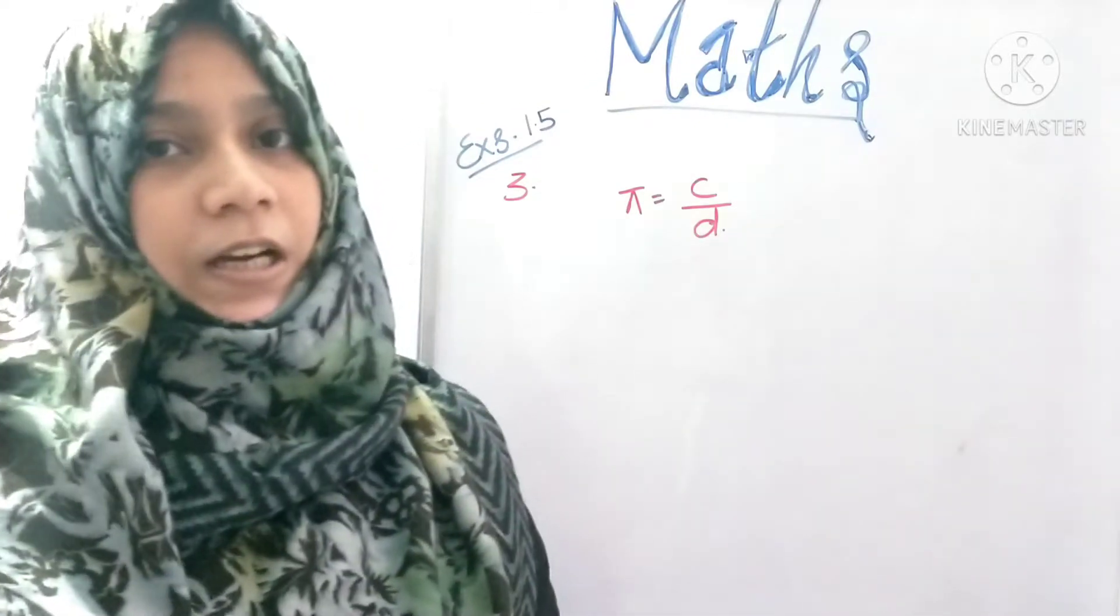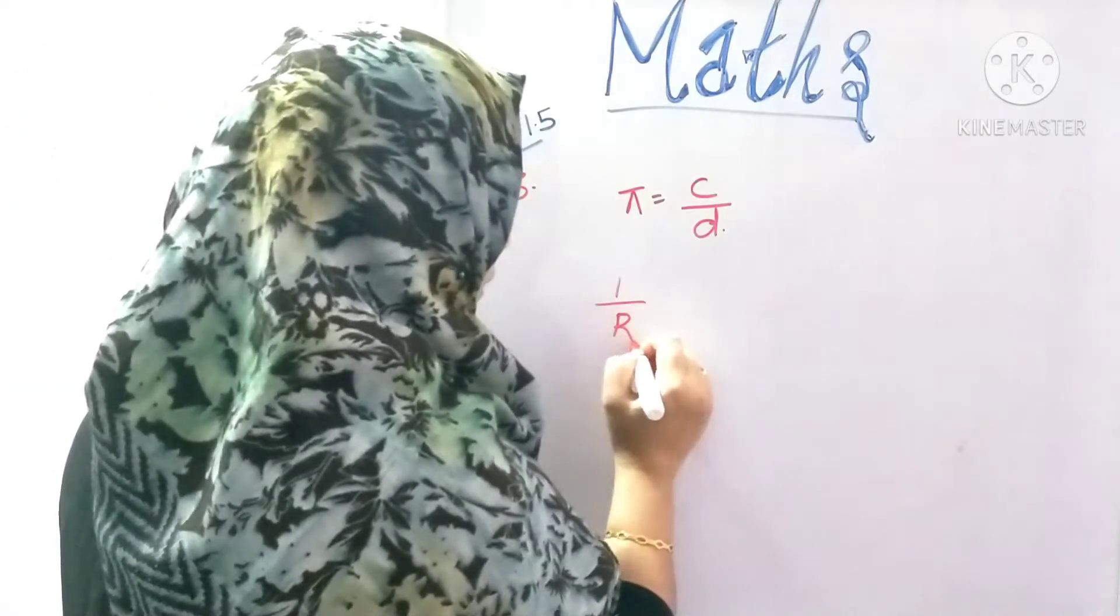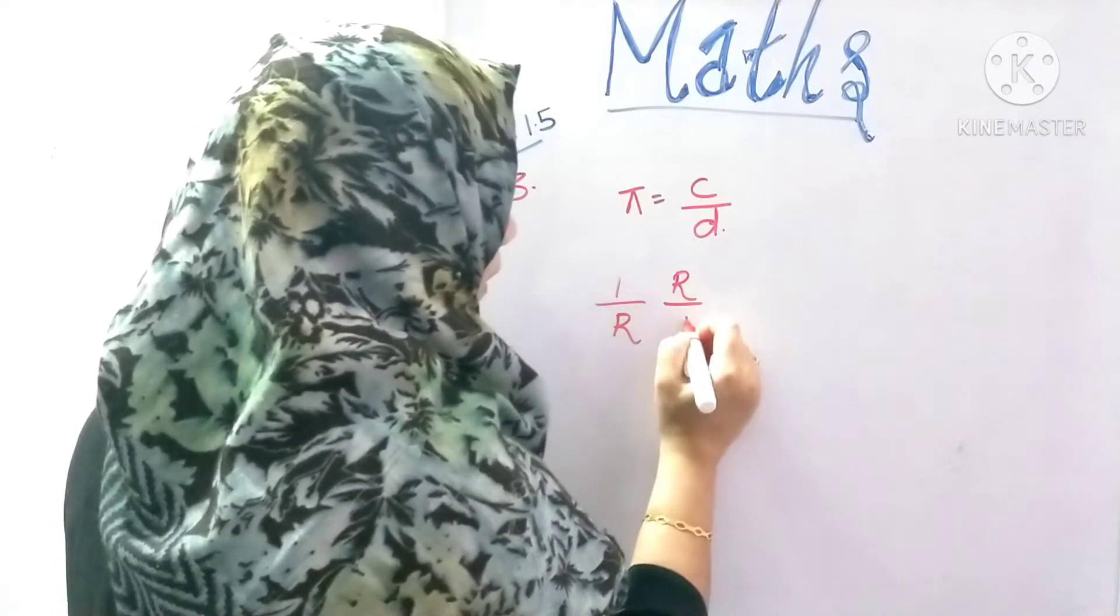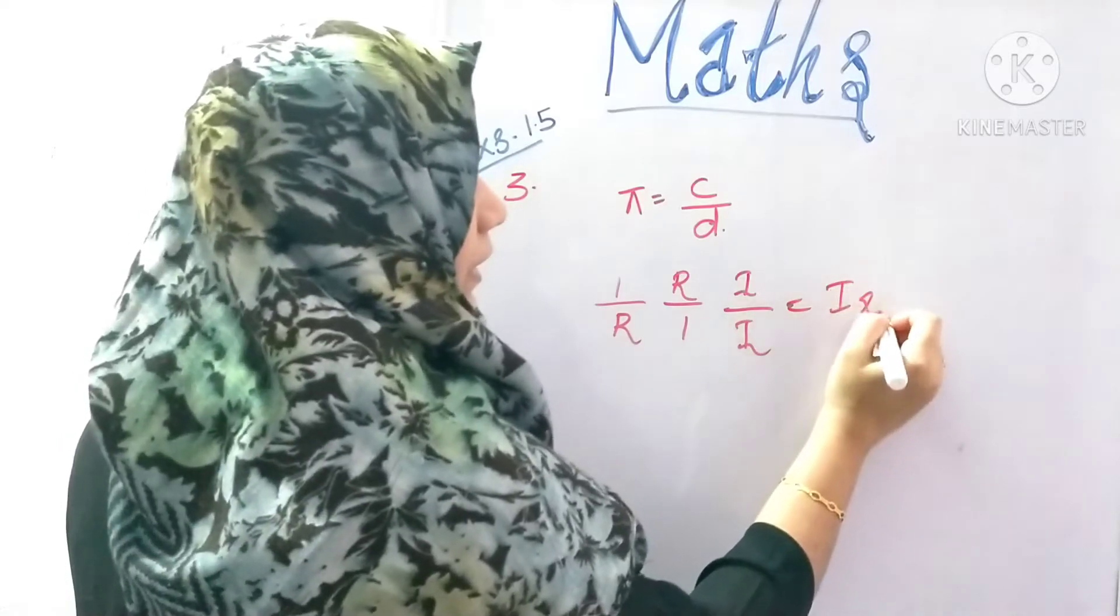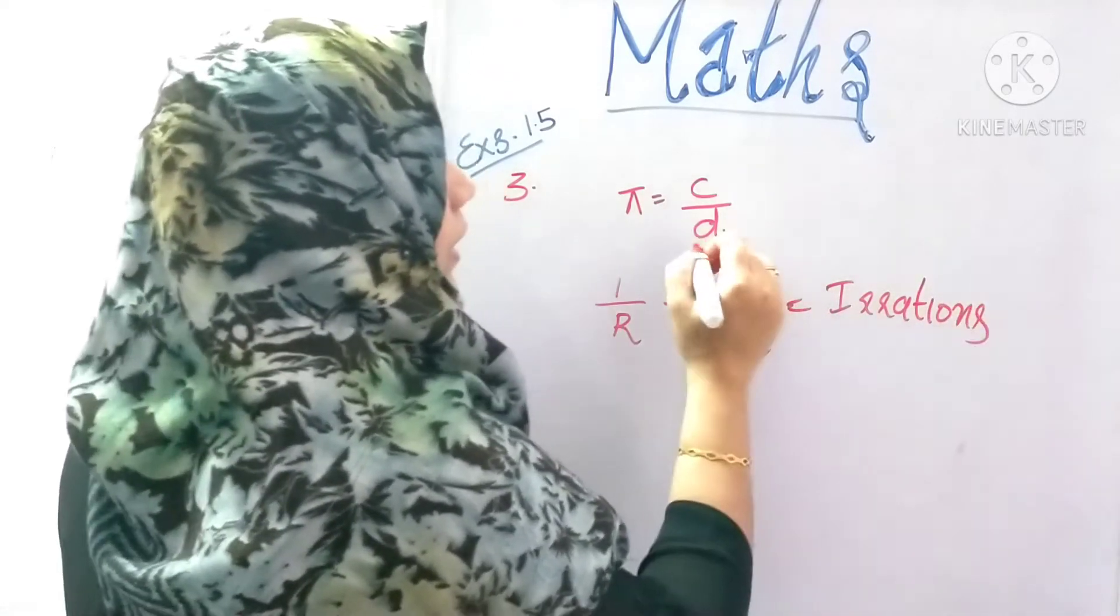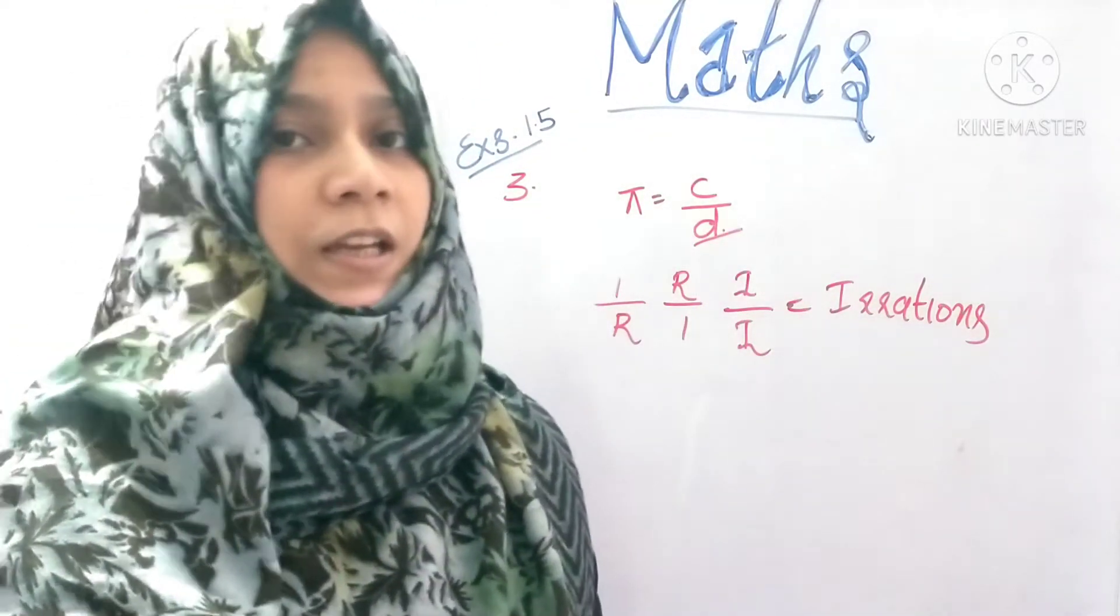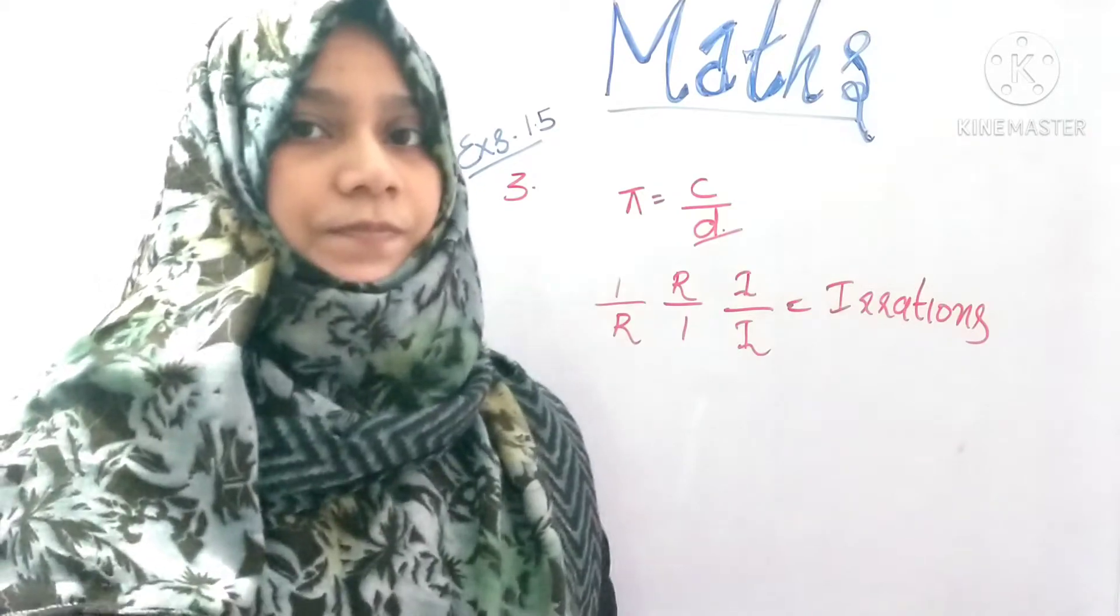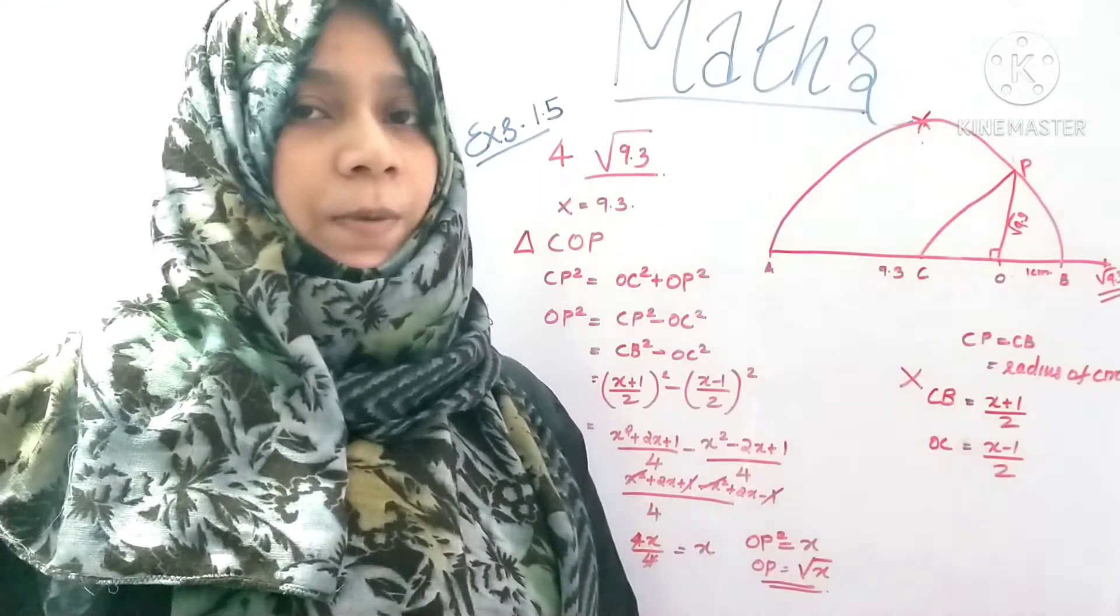So what is the pi? Irrational divided by rational, rational divided by irrational, irrational divided by irrational. Irrational number is irrational.